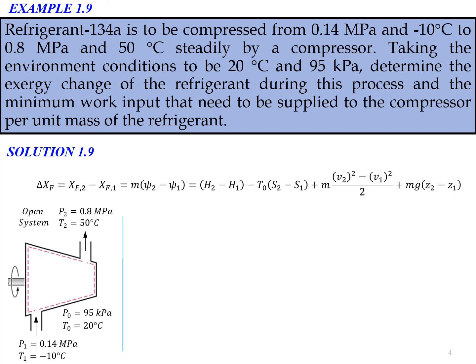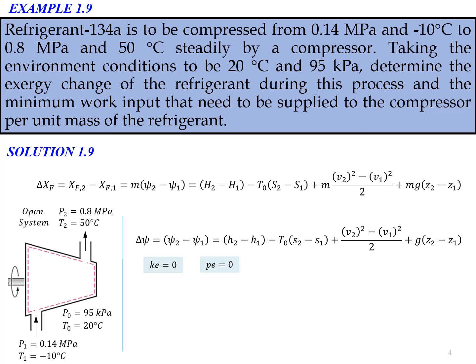First we write the exergy change equation for a flow system. From this equation, dividing by mass to get per unit mass, we know that kinetic and potential energy are zero since the system does not move and there is no change in elevation. We simplify the exergy equation, and it equals the minimum work input.